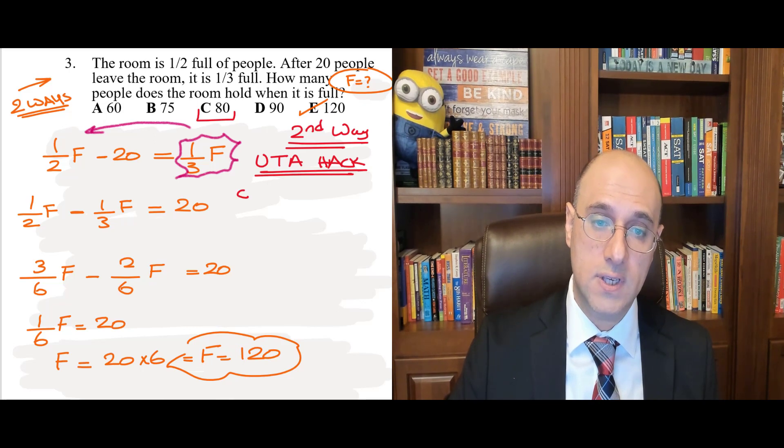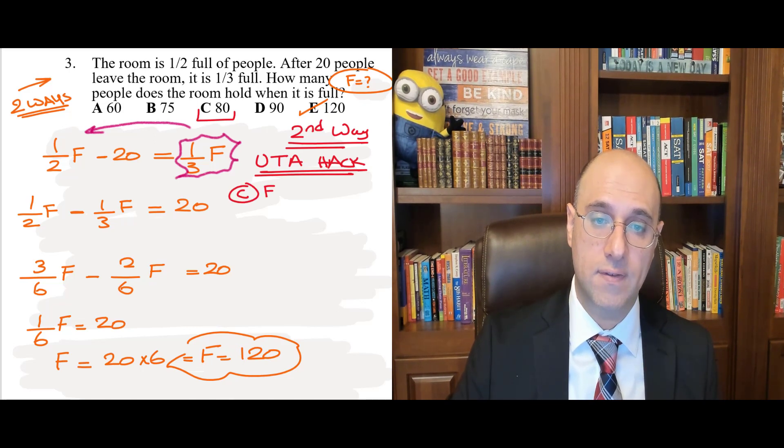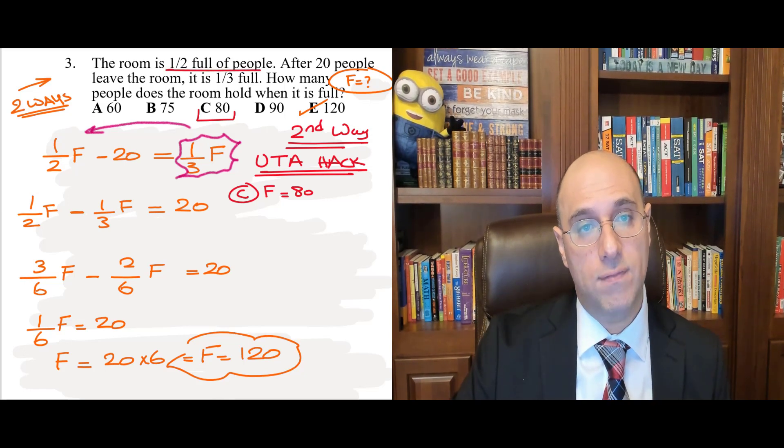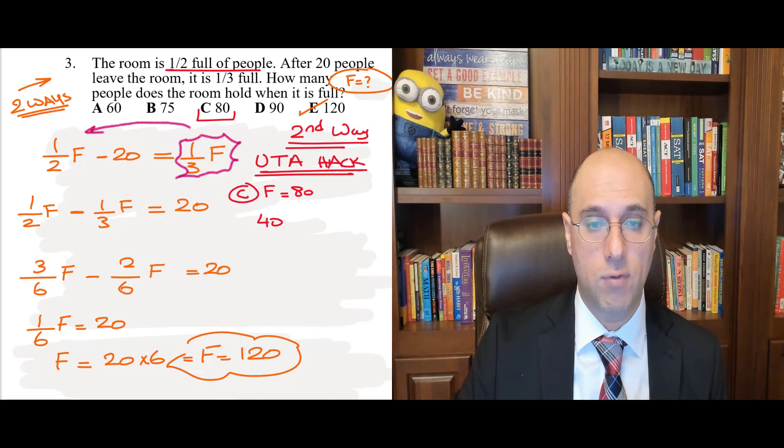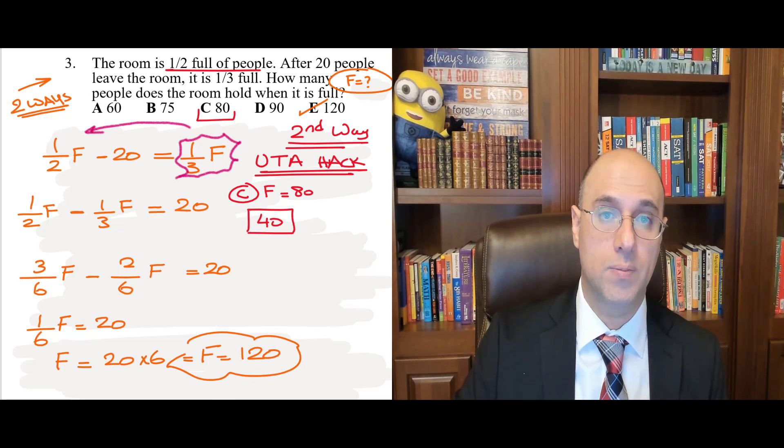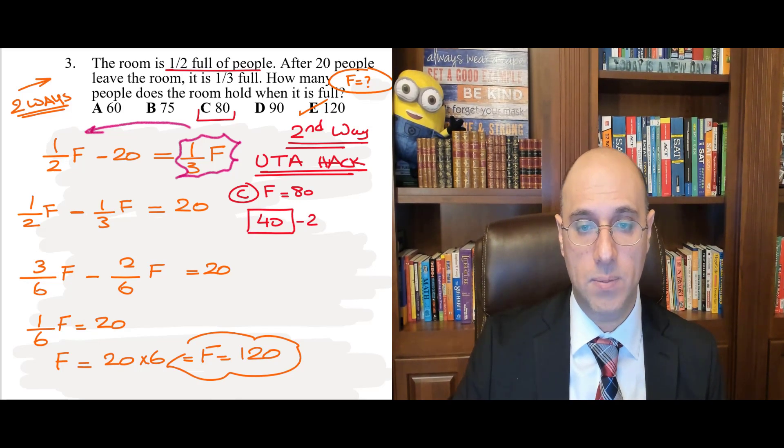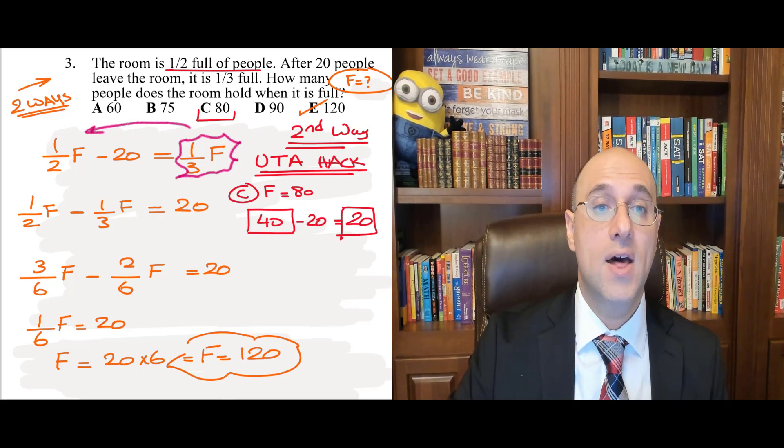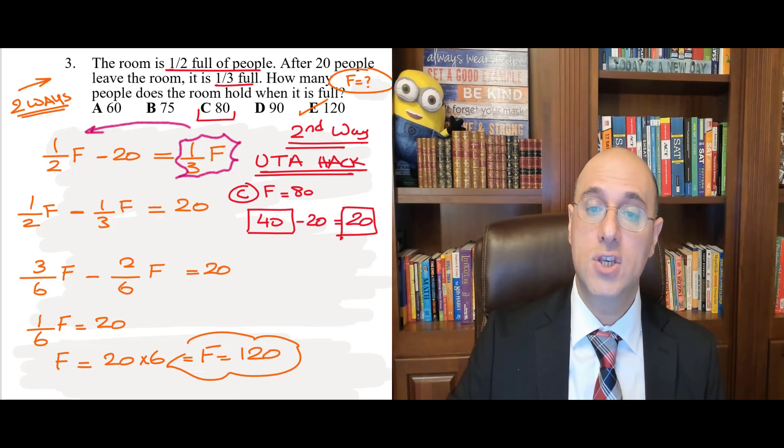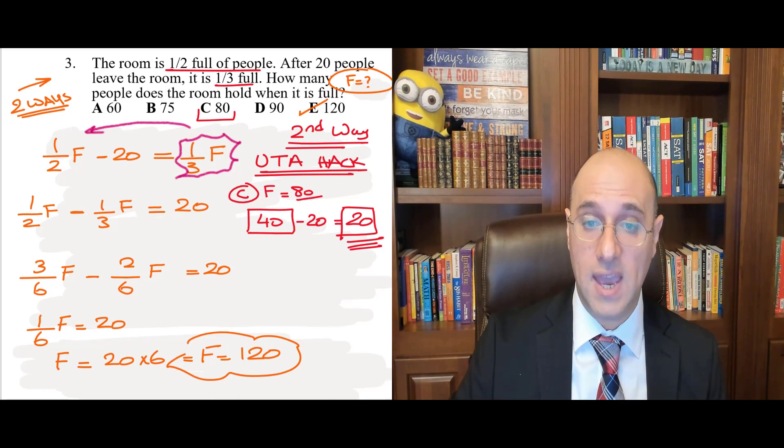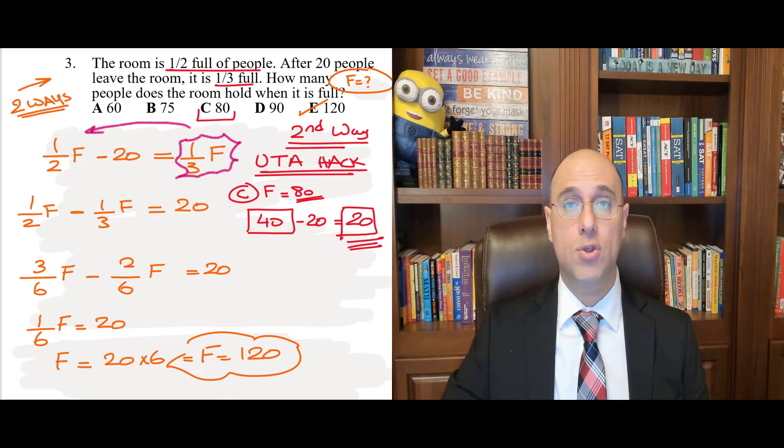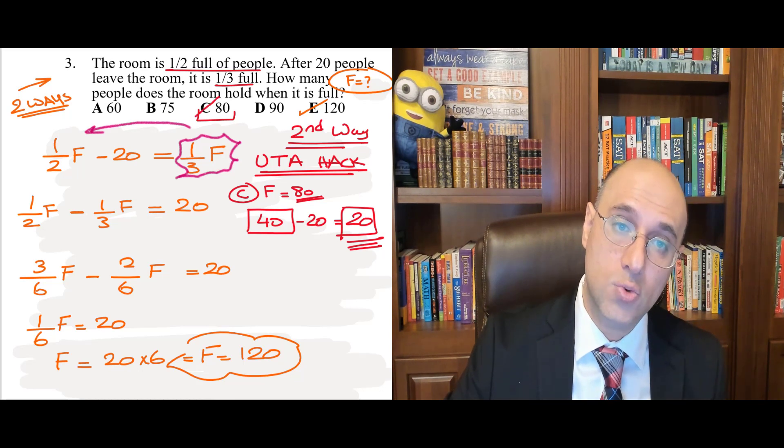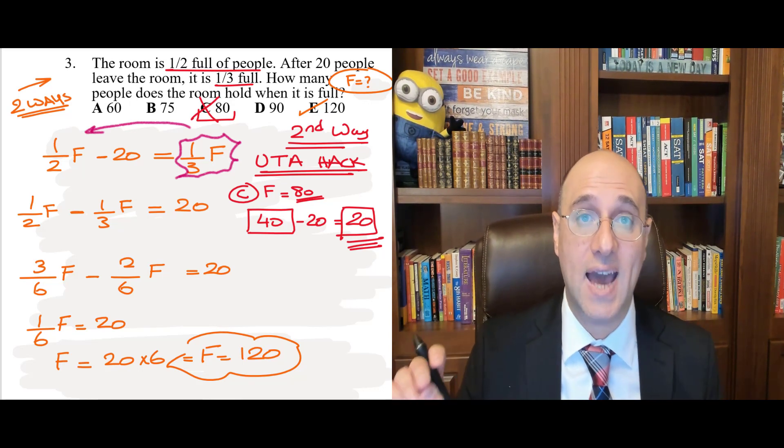So, I'll assume C. F full equals 80 people. All right. Now, let's take a look. The room is half full. So, half of 80 means 40. So, there were 40 people in the room. After 20 people leave, so 20 people leave, I'm left with 20 people in the room. The room is now a third full. So, is 20 a third of 80? No, 20 is a third of 60. Right? It's not a third of 80. So, I know that C is wrong. But here's where the magic of the U-T-A hack comes.